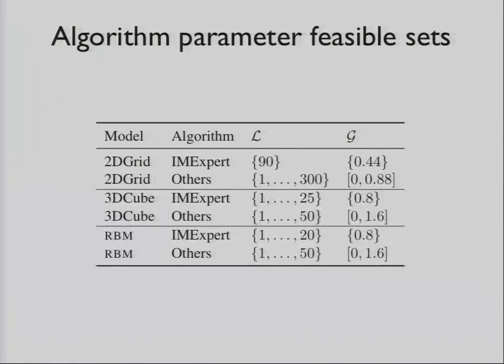Here are the algorithm parameter feasible sets. There's two types of algorithms, the expert one, and then the IM Uniform one and the Bayesian optimization one. We set it such that IM Uniform and IM BayesOpt both draw from a much larger space than the expert one.